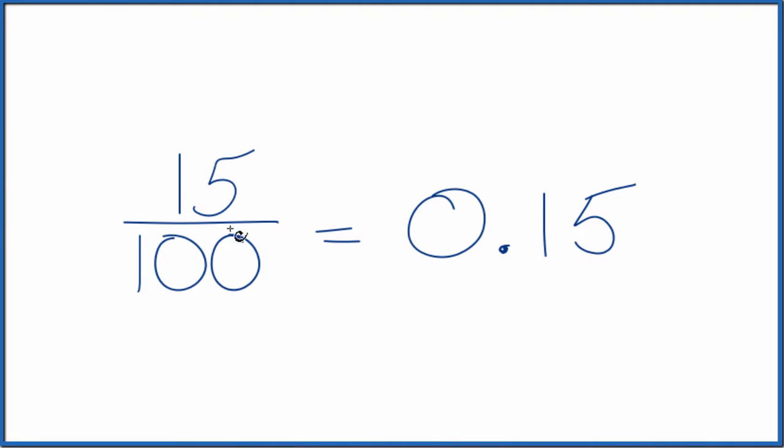because we have this over 100, 15 over 100, we could move two decimal places here to the left. That gives us 1. So right now we're just dividing by 1.